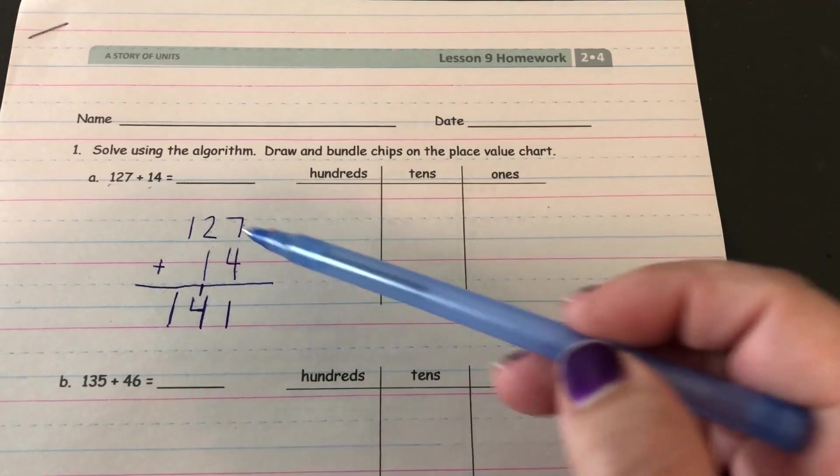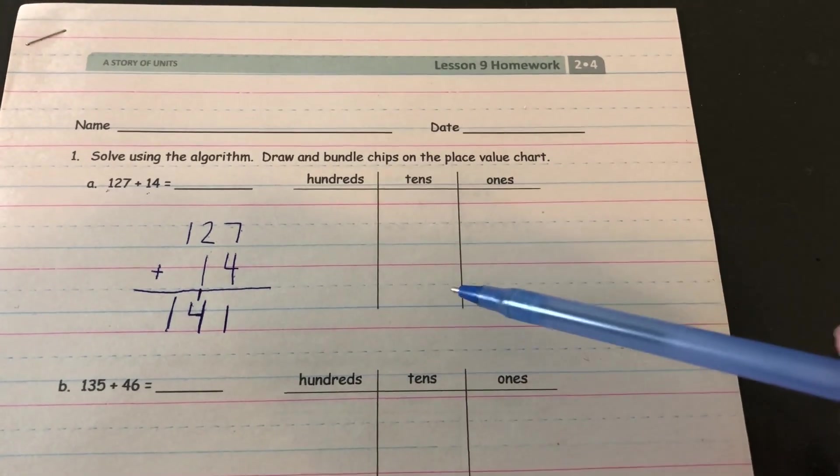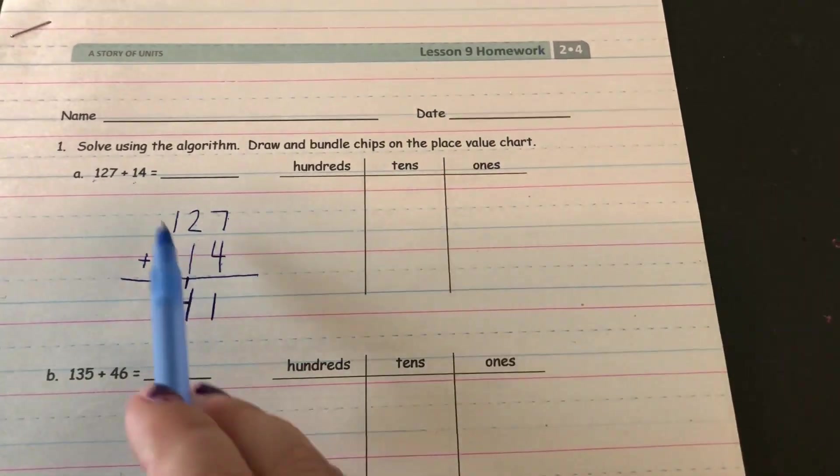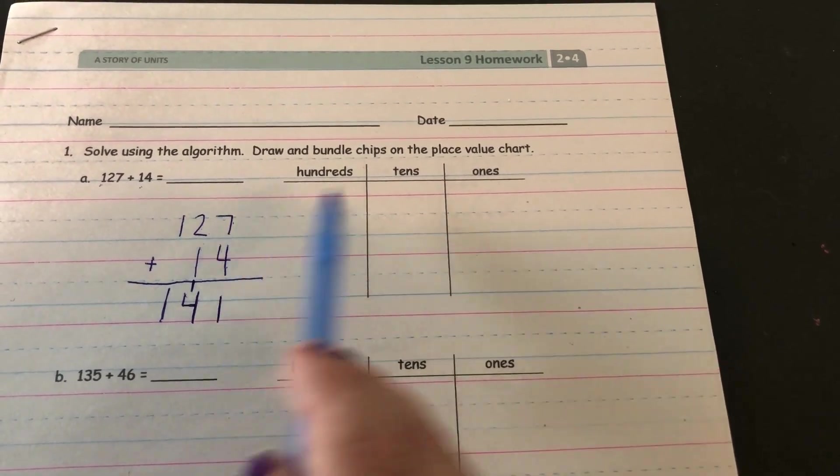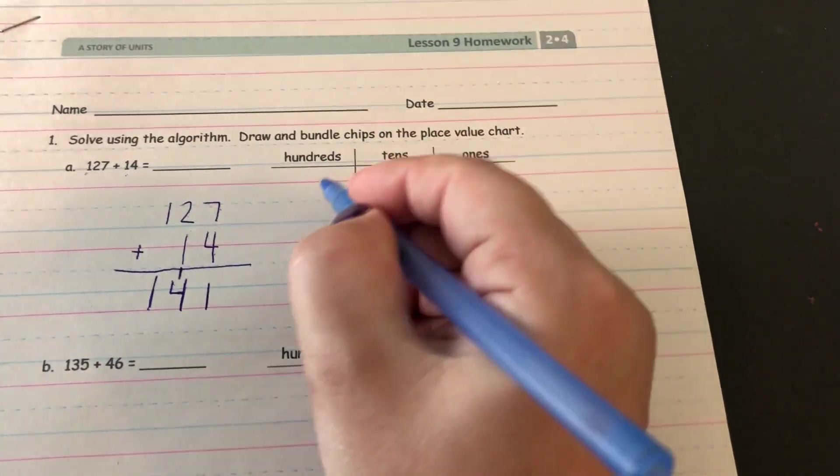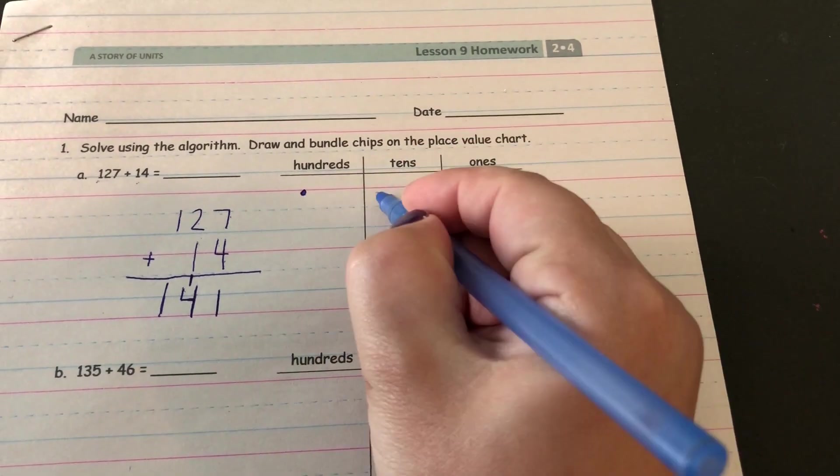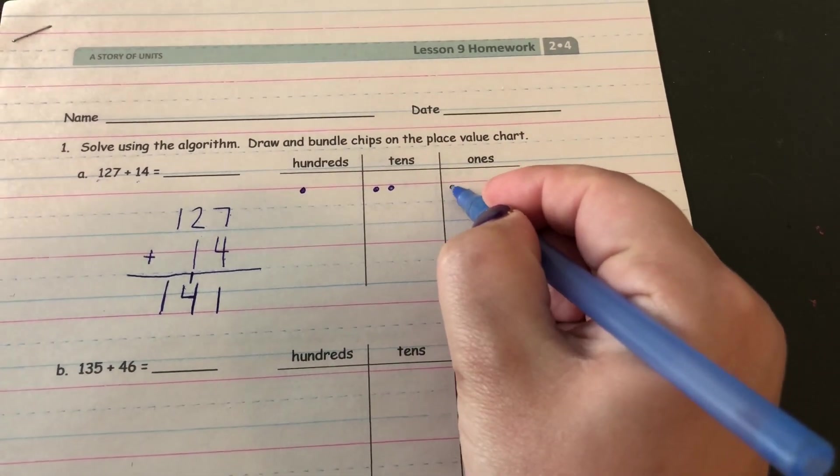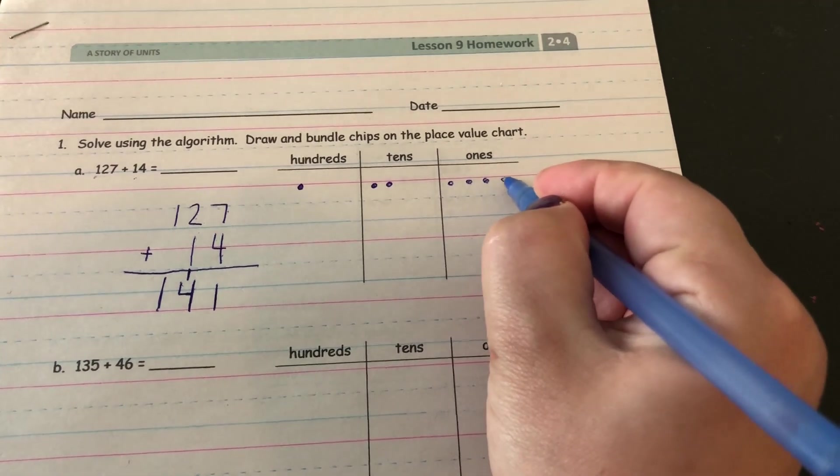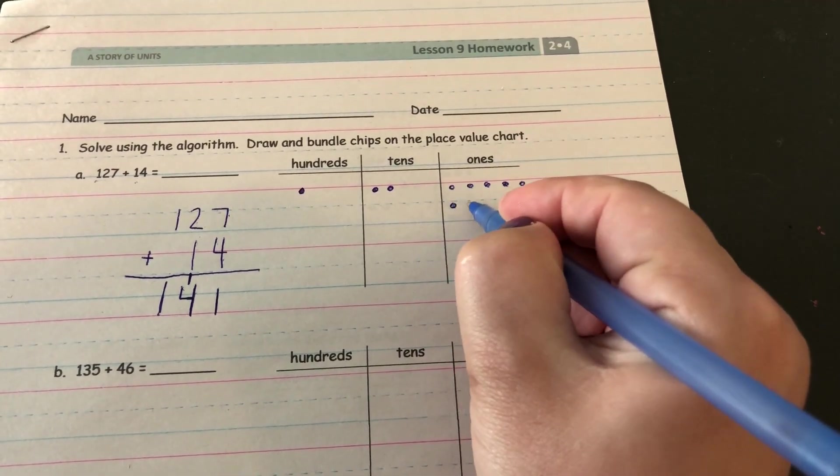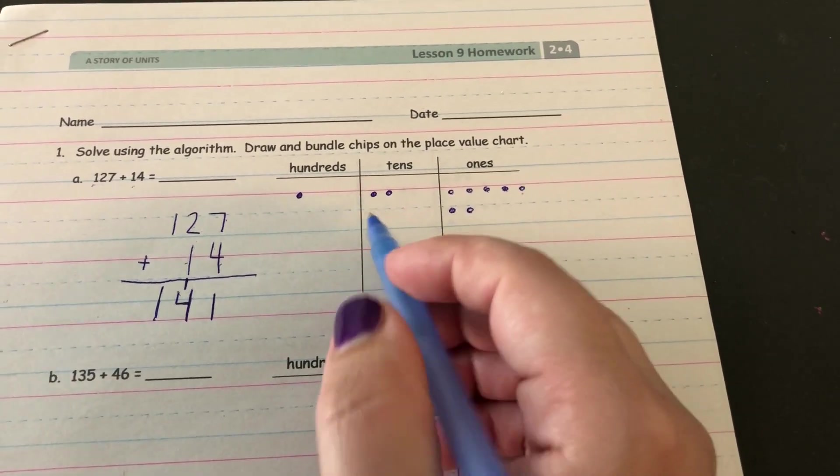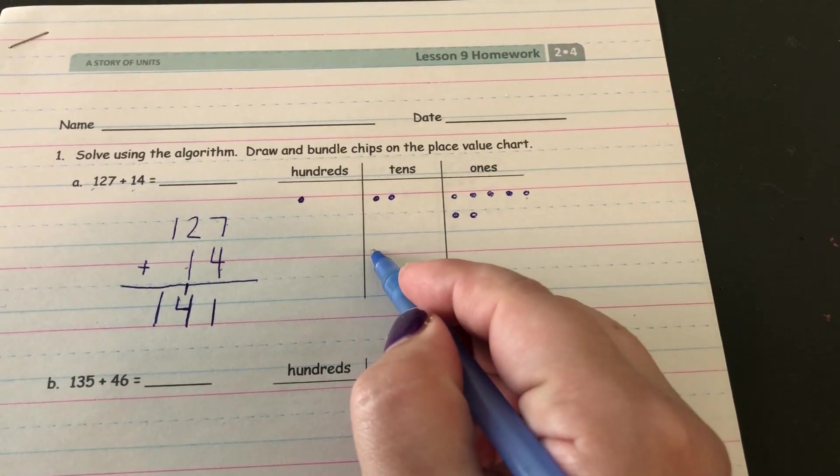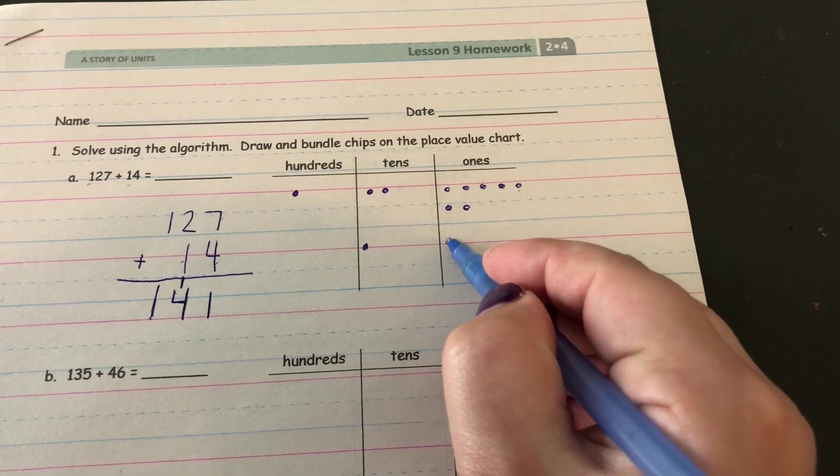Now I'm going to do the same problem but I'm going to show it on a place value chart. So I need to represent 127 on the chart. Looks like 100, two tens, and seven ones. And now I'll represent 14. Has no hundreds, has one ten, and four ones.